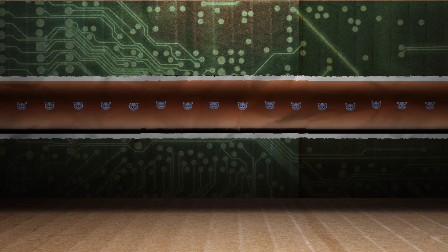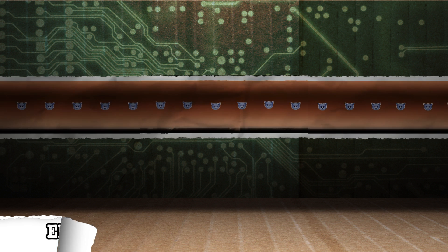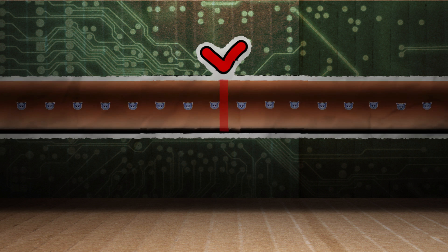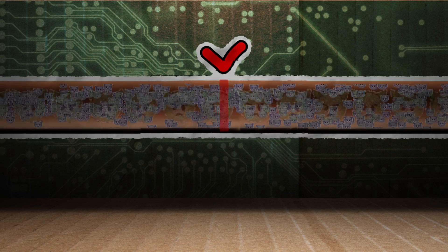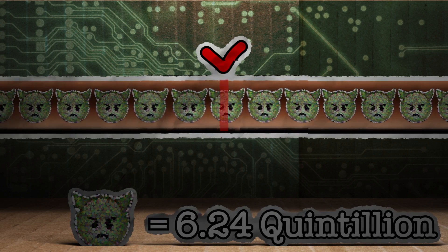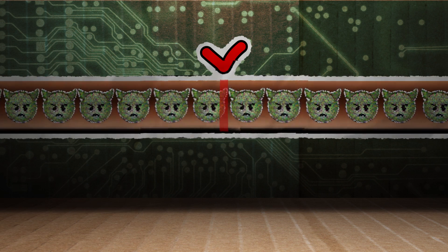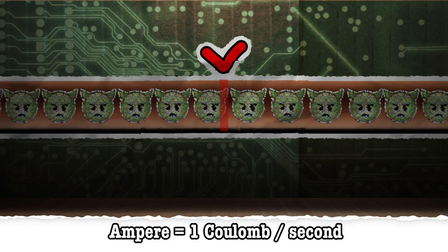This flow of electrons is called current, and that's basically what the flow of electricity is. To measure current, we have to see how fast it flows, so we set up a point to see how long it takes a group of electrons to pass that point. How many per group? A lot more. A ton more. 6.24 quintillion to be exact. This many electrons is known as a coulomb. If it takes one second for this coulomb of electrons to pass this point, then this is called an ampere, or amp.